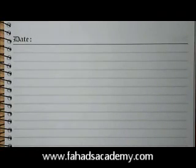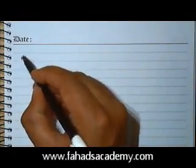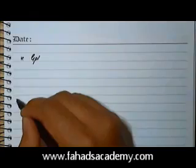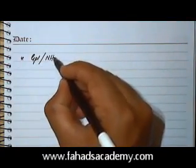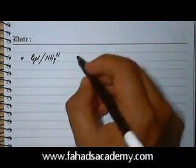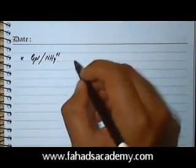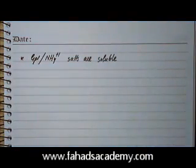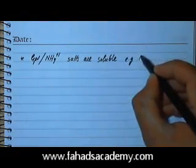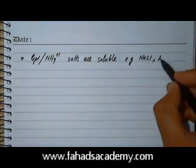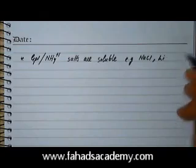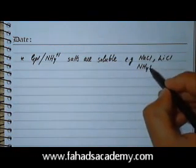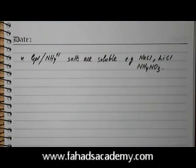Now we're going to construct the solubility table of salts. To start off, the first thing we need to know is that any salt formed by Group 1 elements, which are metals, or the ammonium ion NH4+, is going to be very soluble. So Group 1 and ammonium salts are soluble. For example, NaCl — Na is in Group 1 — LiCl, and ammonium nitrate are all soluble salts.